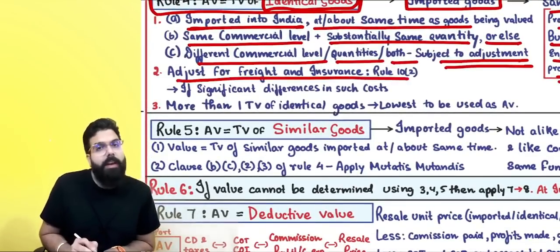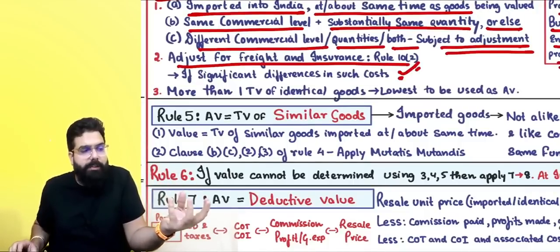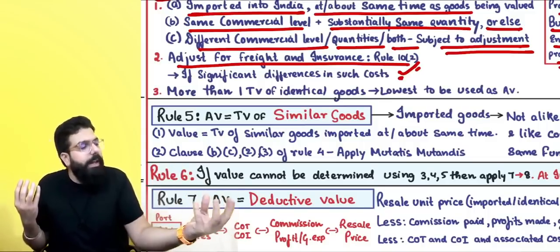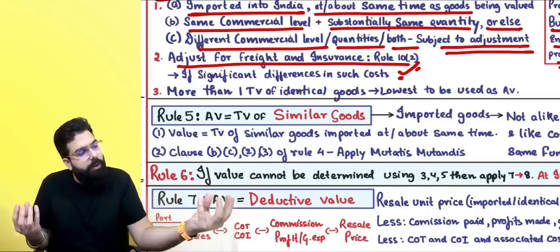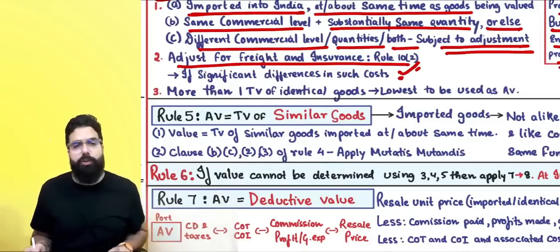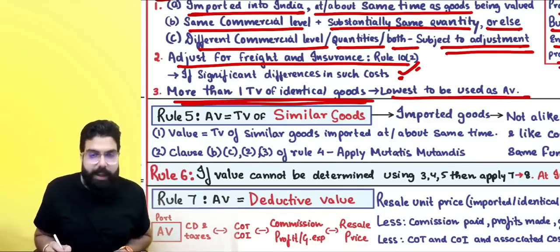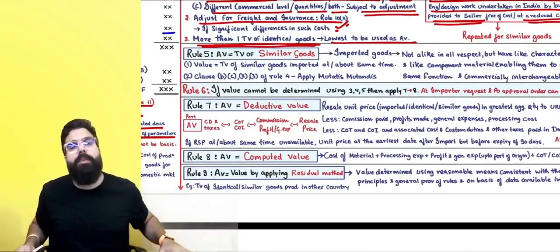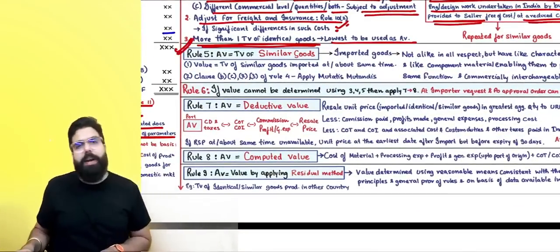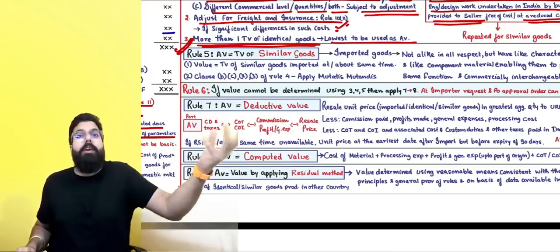Different commercial level or quantity is also fine but subject to adjustment. The officer will make adjustment for freight and insurance if there is a significant difference. For example, if identical goods were imported in Chennai but your goods were imported in Goa, freight and insurance costs could differ, so adjustment will be made. If more than one transaction value is identified, the lowest will be taken as the acceptable value.